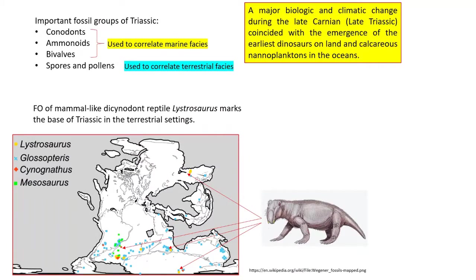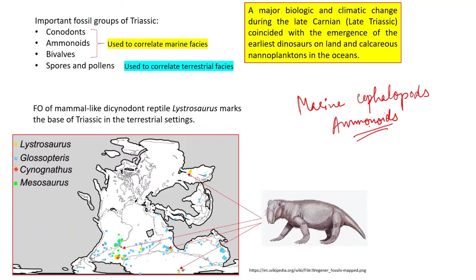The important fossil groups of the Triassic: the entire Mesozoic era has been defined on the basis of marine fossils. The terrestrial areas had important occurrences of dinosaurs and reptiles, but in biozonations, the Mesozoic has been defined on the basis of marine cephalopods — more specifically, Ammonoids. For marine facies, Conodonts, Ammonoids, and bivalves were the important fossils.